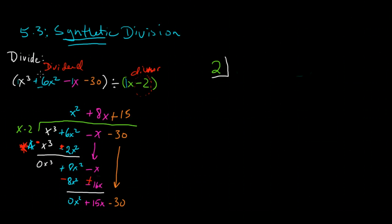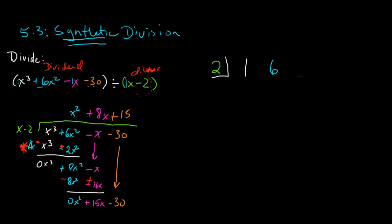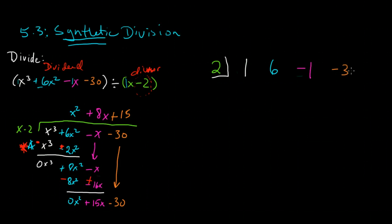And then we'll just bring all the coefficients of the dividend. So the coefficient of the first number, x cubed, is a 1. The coefficient of the second number, 6x squared, is a 6. The coefficient of the third term is a negative 1x. And finally, the constant, or the coefficient, of the x to the 0 power is a negative 30.